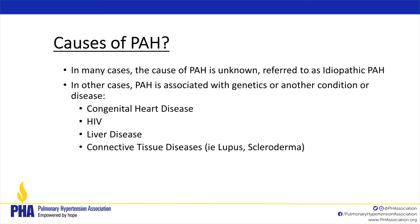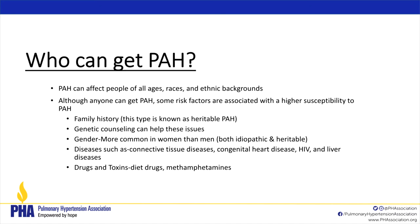In many cases the cause of PAH is unknown — referred to as idiopathic PAH, which is WHO group 1. We wish we knew what causes it. In other cases, it's associated with genetics or another condition such as congenital heart disease, HIV, liver disease, or connective tissue disease like lupus or scleroderma. PAH can affect everyone — all ages and races. It does not discriminate across any lifespan. Genetic counseling is available if someone in your family has it.